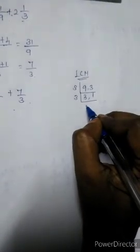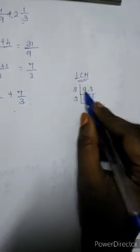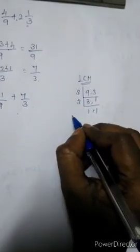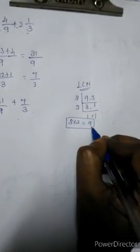Again 3. 3 times 1 is 3. We are getting 1. So now for LCM 3 times 3 is 9. We have the LCM here 9.